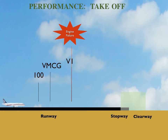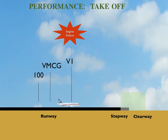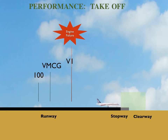If the pilot decides to reject the takeoff: the aircraft commences its roll, encounters the normal speeds, and at V1 the pilot detects an engine failure. After a two-second delay he initiates actions for a rejected takeoff — closing thrust levers and applying brakes and speed brakes. The aircraft decelerates and comes to a complete halt by the end of the stopway.